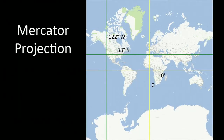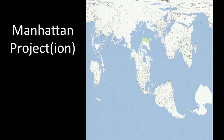Mercator projection is all about making latitude and longitude appear to be straight. So there's the equator. The South Pole is just in the South Pacific — not as interesting.